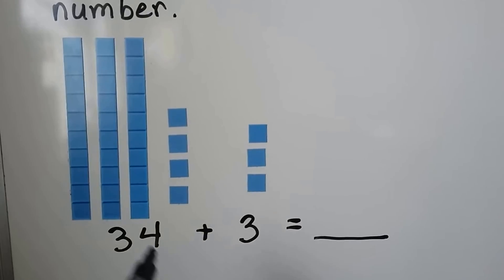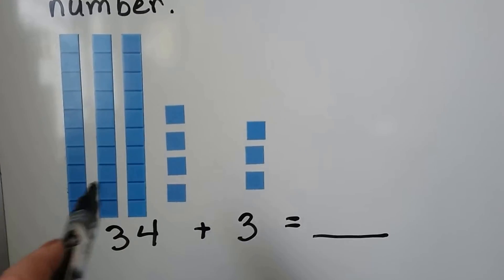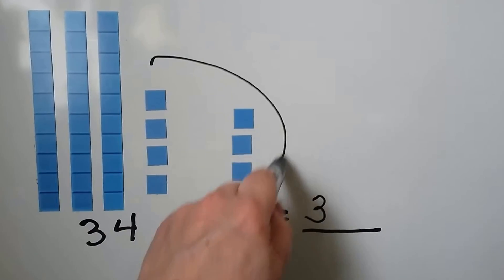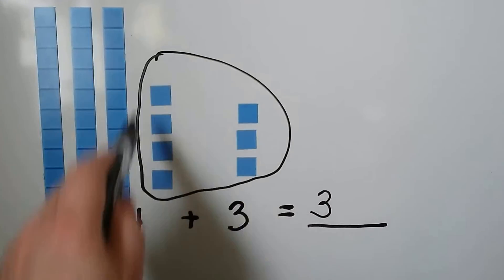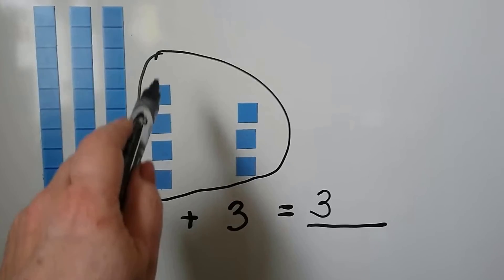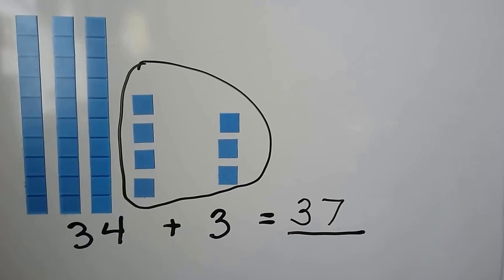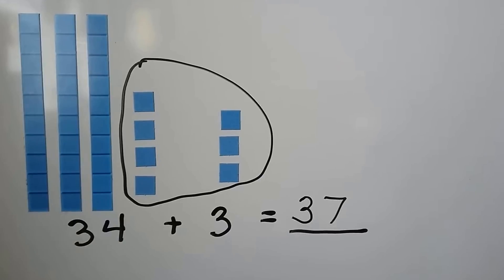We can just count the 3 tens, and we can group the 1s together. We have 1, 2, 3, 4, 5, 6, 7. 34 plus 3 is equal to 37.